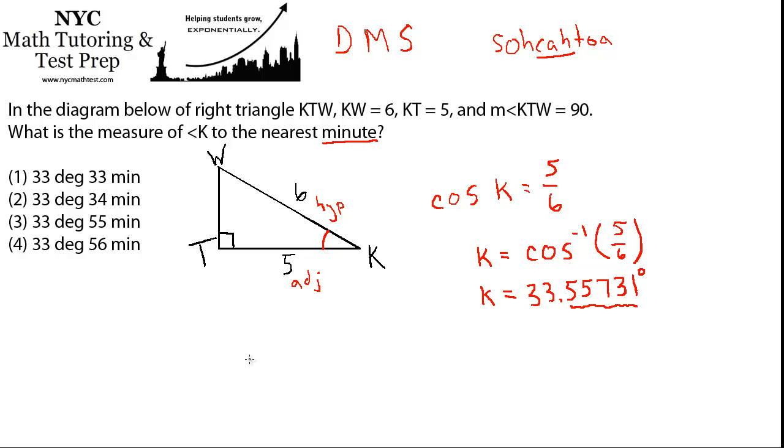So we can actually set up a ratio. So if this is 55.731 out of 100, then what would it be if it was out of 60? Because there's 60 minutes in a degree.